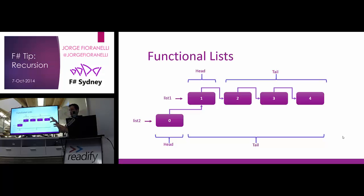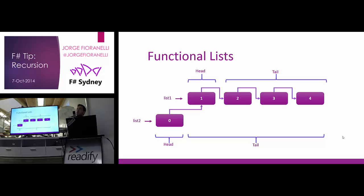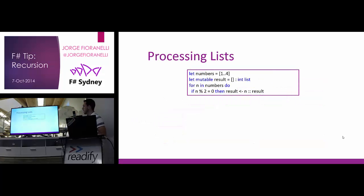If you need mutability, you can add the `mutable` keyword to change and add items to the list. However, if what you are looking for is to change the items inside the list, that might be a better case for an array — because arrays are structures you use in functional programming when you know the items inside are going to change.